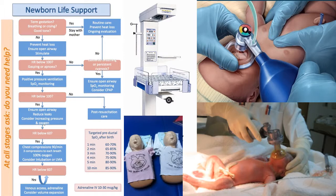If the heart rate is below 100 and the SATs are good, you can apply post-resuscitation care. Targeted pre-ductal SATs after birth: at 1 minute, 60–70%; at 2 minutes, 65–85%; at 3 minutes, 70–90%; at 4 minutes, 75–90%; at 5 minutes, 80–90%; at 10 minutes, 85–90%. So don't panic at first, and always use room air for the first IPPV in the first 30 seconds to a minute.